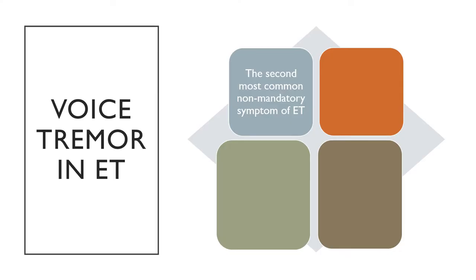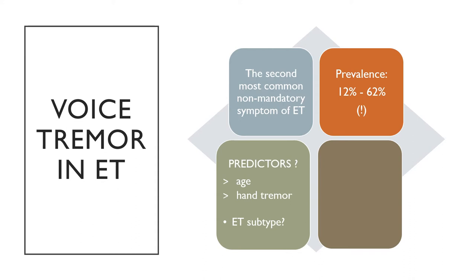Voice tremor is the second most common non-mandatory symptom of essential tremor, just after head tremor. The reported prevalence varies a lot between studies, from 12% up to as much as 62%. Why some patients develop voice tremor and some don't is not well understood, but there are indications of voice tremor being more common in older patients and in patients with more severe hand tremor. Essential tremor is a very heterogeneous condition and it could be that patients developing voice tremor make up a specific subtype.